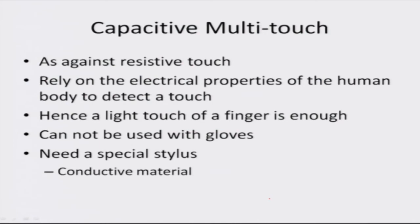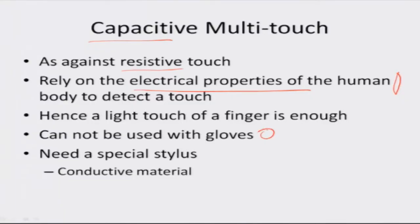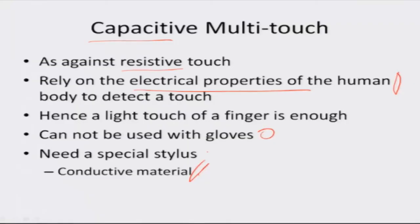Capacitive multi-touch screens are screens with which you interact with the phone and give input to it. Capacitive is as against resistive touch — earlier generation touch devices used resistive touch but they are no longer in vogue. Capacitive devices actually rely on the electrical property of the human skin and body to detect a touch, which is why they are very sensitive. Because of this, you cannot use them with gloves, and if you want to write with a stylus, you need a special pen designed for capacitive touch screens.